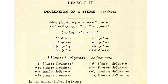Now we move on to the plural column with plural nominative first: 'oi dikaioi anthropoi.' See the 'oi' agreement among all three of those units. Next, we have the genitive plural: 'ton dikaion anthropon.' Next, we have the dative plural: 'tois dikaiois anthropois,' with that 'ois' ending in all three. Then finally, we have the plural accusative: 'tous dikaious anthropous.'